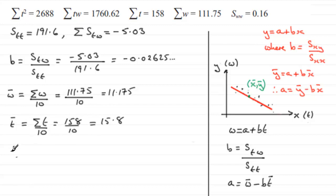Now we can get what a is. a is equal to w bar minus b t bar. So w bar then is going to be 11.175 minus b. We've got the b up here. So it's going to be minus minus, so might as well change that to a plus there. And it will be 0.02625 and so on, multiplied by t bar, which is 15.8. And if you work that one out, you end up with that equaling 11.5897 and so on.